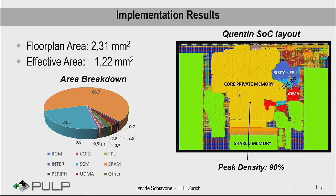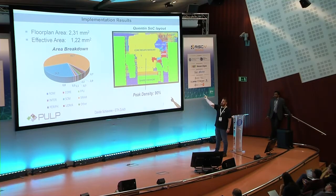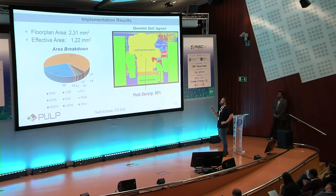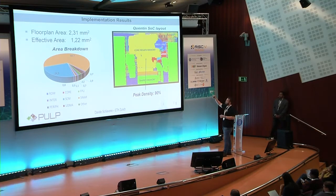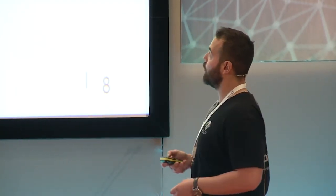Let's go back to Quentin. We got an area of 2.3 millimeters squared. As you can see, most of the area is taken by memories. In the green part, there is the interleaved part with SRAM and some SCM. The yellow part is the non-interleaved part. The effective logic area — where things are logically inserted — is just 1.2 millimeters squared. The core, microDMA, and all the interconnect occupy a very small percentage of the total area.